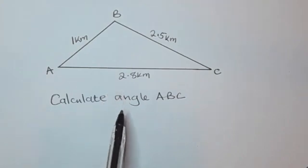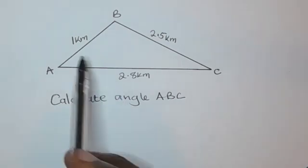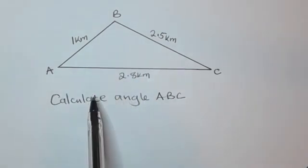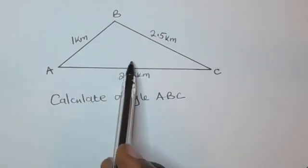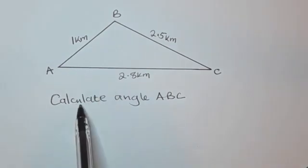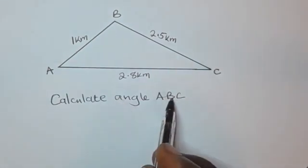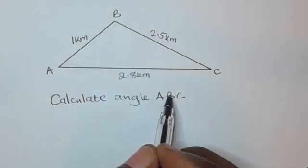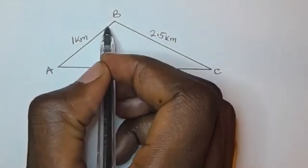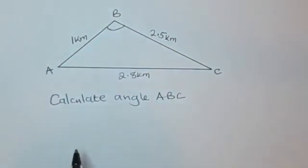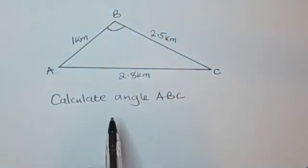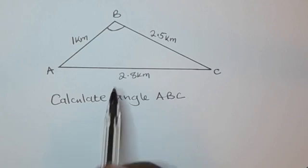In this video we are going to look at how to find an angle of a triangle given all three sides. The question says calculate angle ABC. The middle letter indicates the vertex at which that angle is, so the angle is at B. This is the angle we are asked to find. Whenever you're given all three sides of a triangle and asked to find an angle, you use the cosine rule.